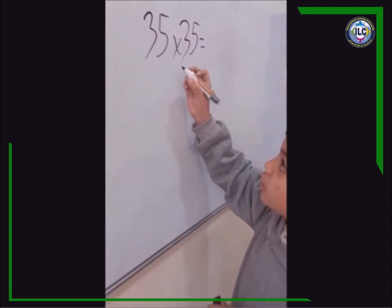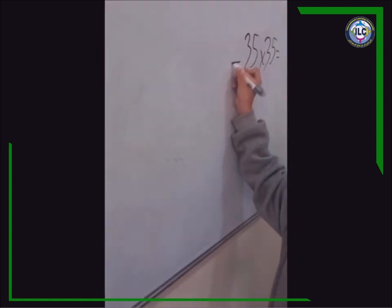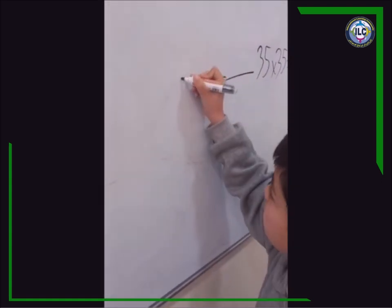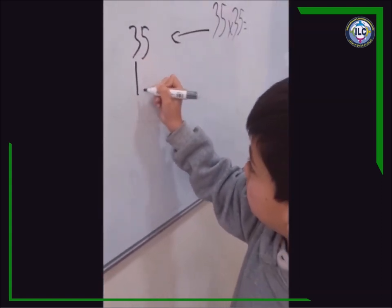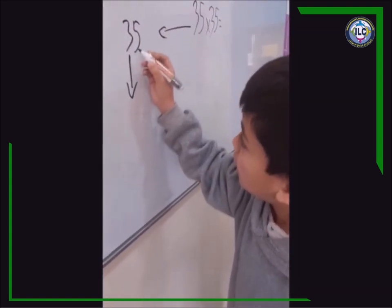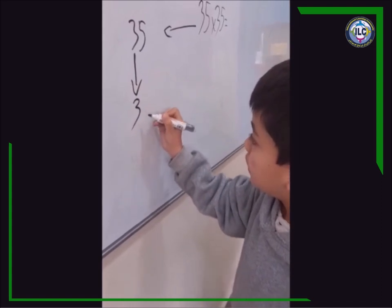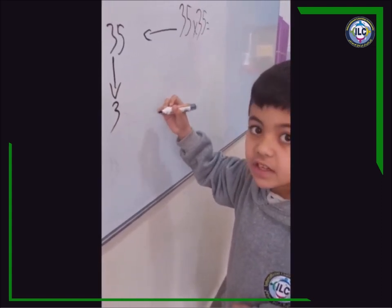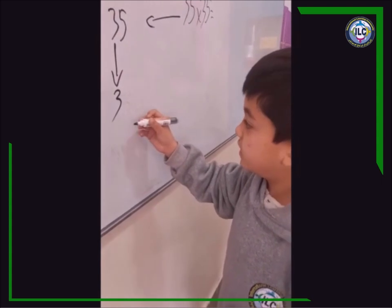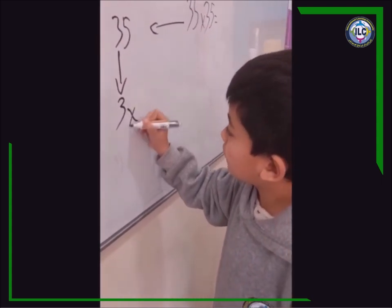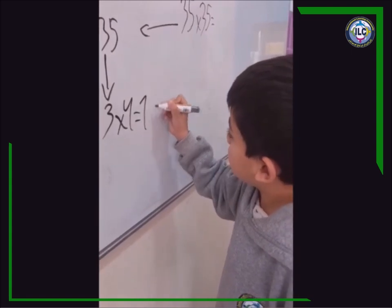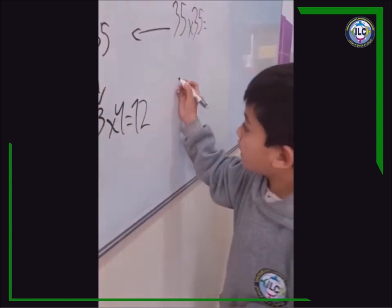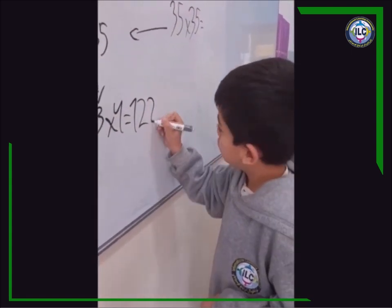I'm going to take the number 35. Then I take the tens digit, which is 3. Then I think of the next greater number, which is 4, and I'm going to multiply it by 3. When I get the answer, which is 12, I add on the right side 25.